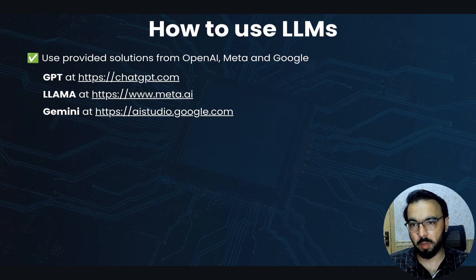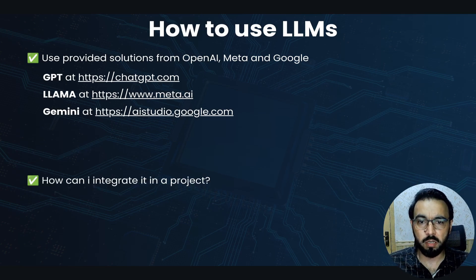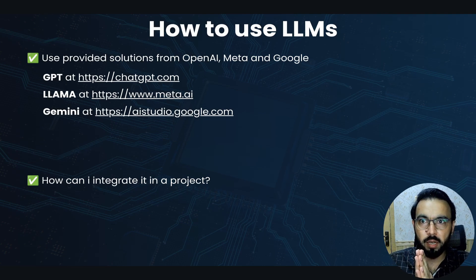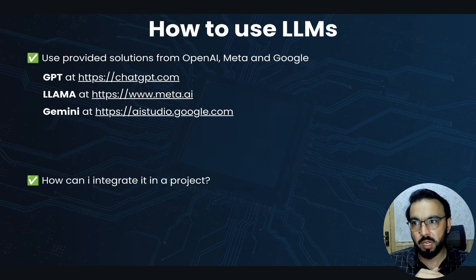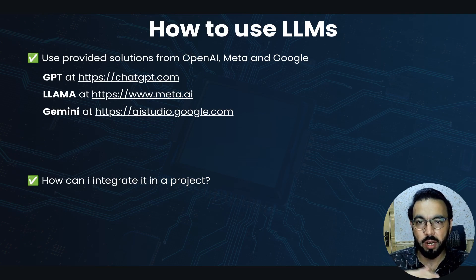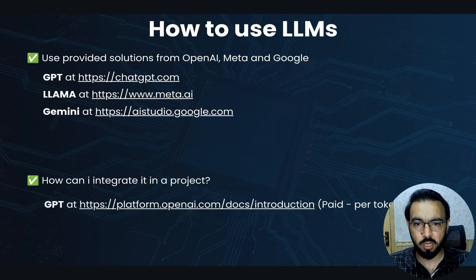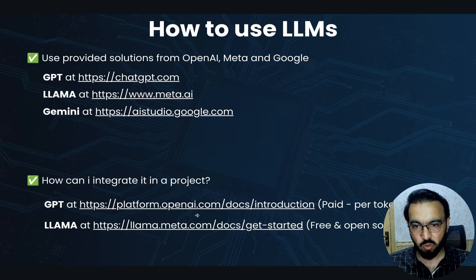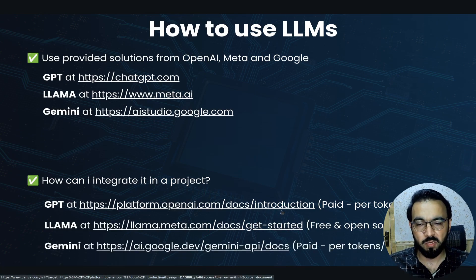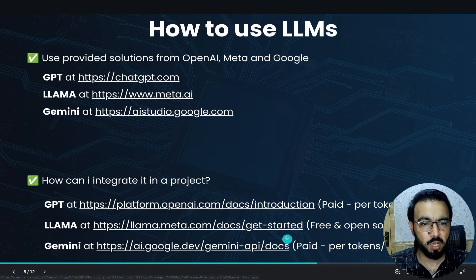How can you integrate it into a project? For example, if you have an e-commerce site and need a support system, you can take the GPT model and instead of answering from its general training data, the chatbot will answer in the context of your e-commerce site. For GPT, go to platform.openai.com; for Llama, go to llama.meta.com; and for Gemini, go to ai.google.dev/gemini-api/docs.